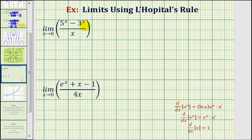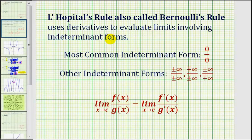Welcome back for two more examples of determining limits using L'Hopital's Rule, where these two examples involve exponential functions. L'Hopital's Rule uses derivatives to evaluate limits involving indeterminate forms, where the most common indeterminate form is zero divided by zero, but these are also considered indeterminate forms. So if we have a limit that involves an indeterminate form, this is equal to the limit as x approaches c of f prime of x divided by g prime of x.